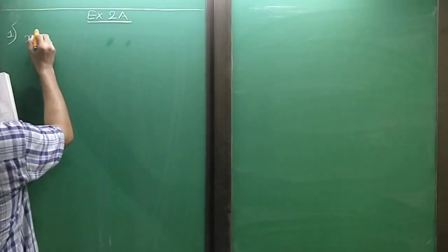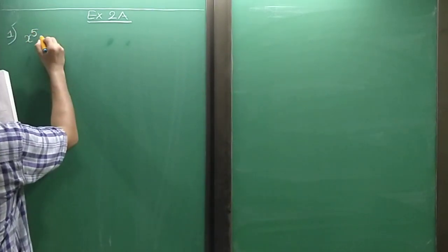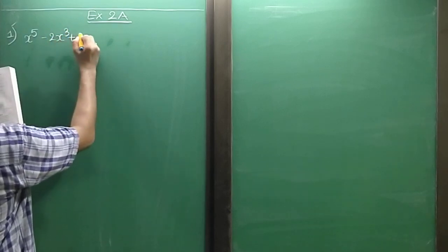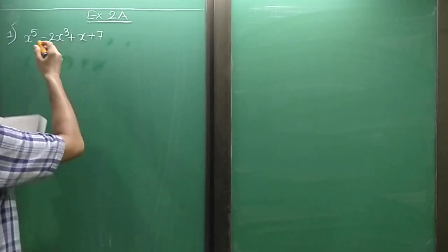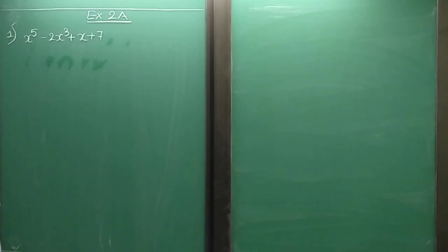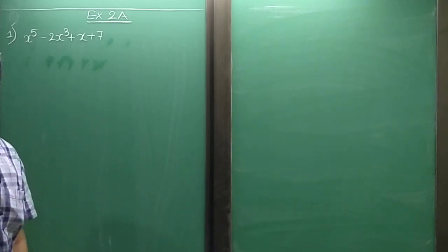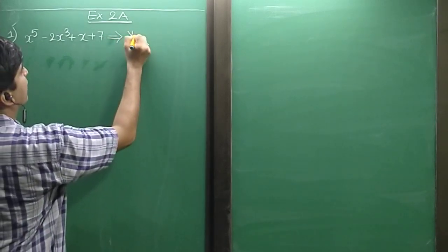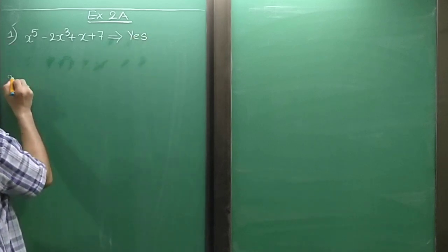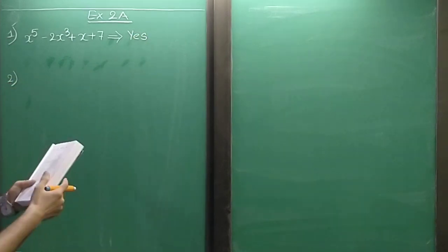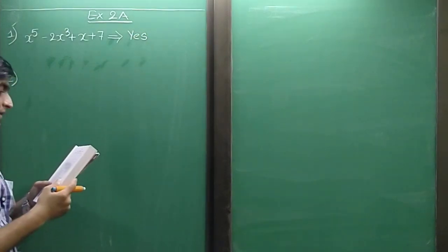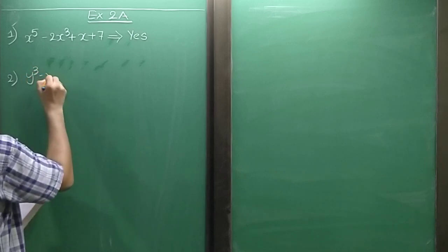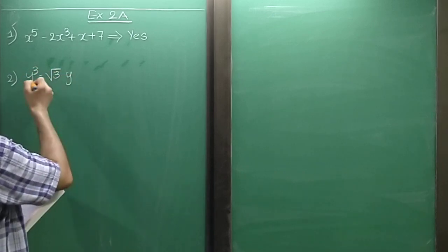Sum 1: x raise to 5 minus 2x cubed plus x plus 7. Here the powers are whole numbers, so yes, it is a polynomial. Sum 2: y cubed minus root 3 times y. Again, the powers are whole numbers, so yes.